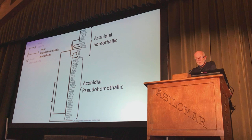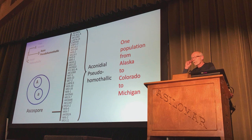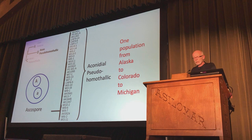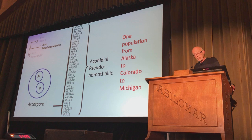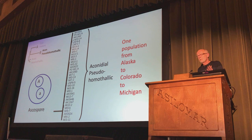The B clade has the acanidial homothalics and the acanidial pseudohomothalics. I'm going to focus on the pseudohomothalics. You will remember that pseudohomothalics have the ascospore created such that nuclei of both mating types are in one ascospore, so it shouldn't have to find a mate. You will also remember that the heterothallic fungi separate into populations — you could separate Alaska from Colorado from Michigan. But you can't in this pseudohomothallic population. I don't understand that. How does it get around like that? Maybe it doesn't have to find a mate and that makes it easier to disperse. I can't explain it.